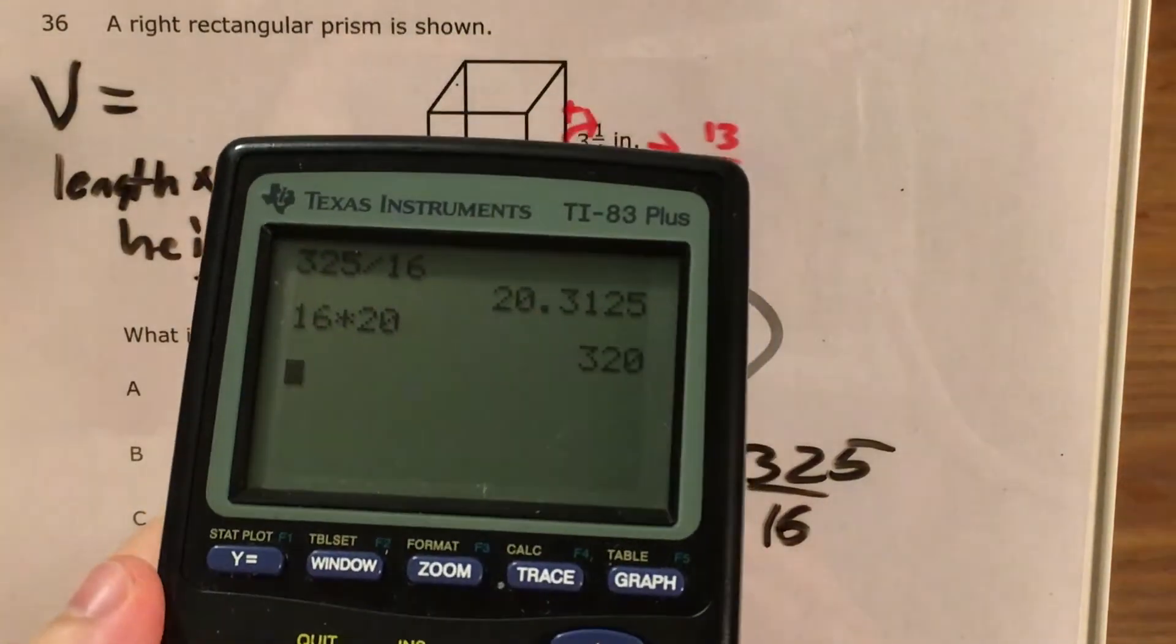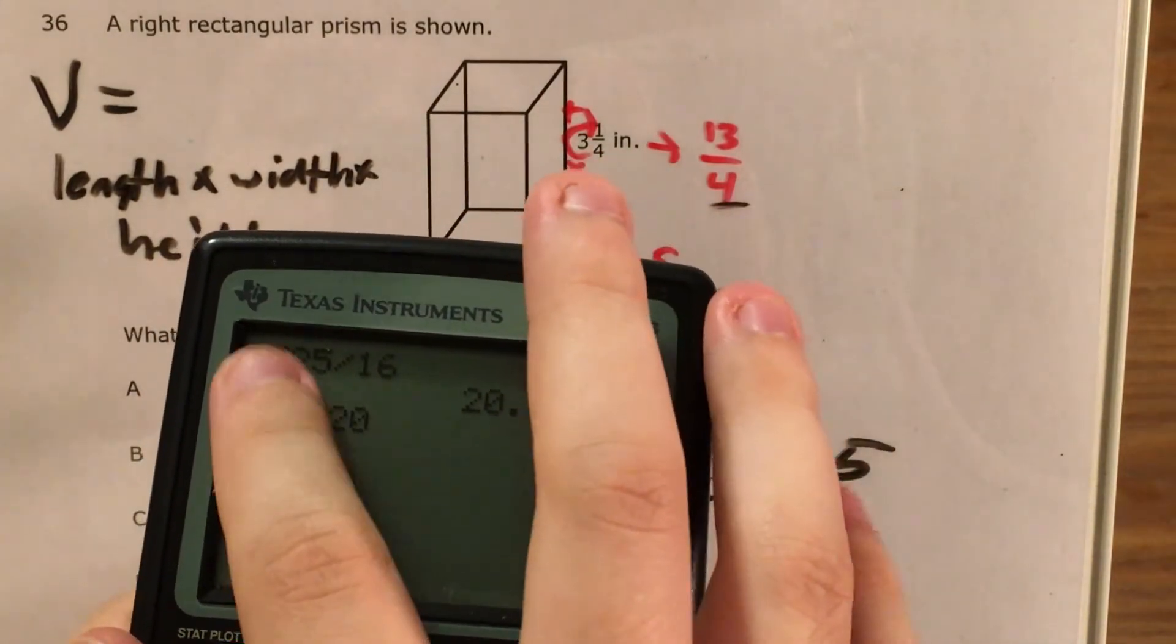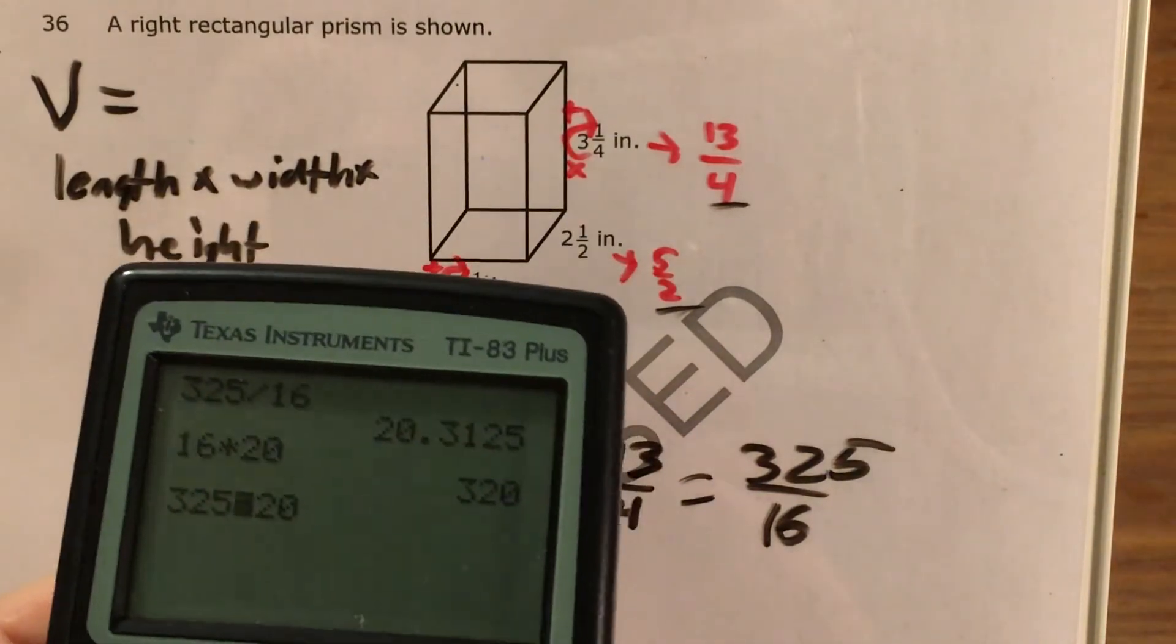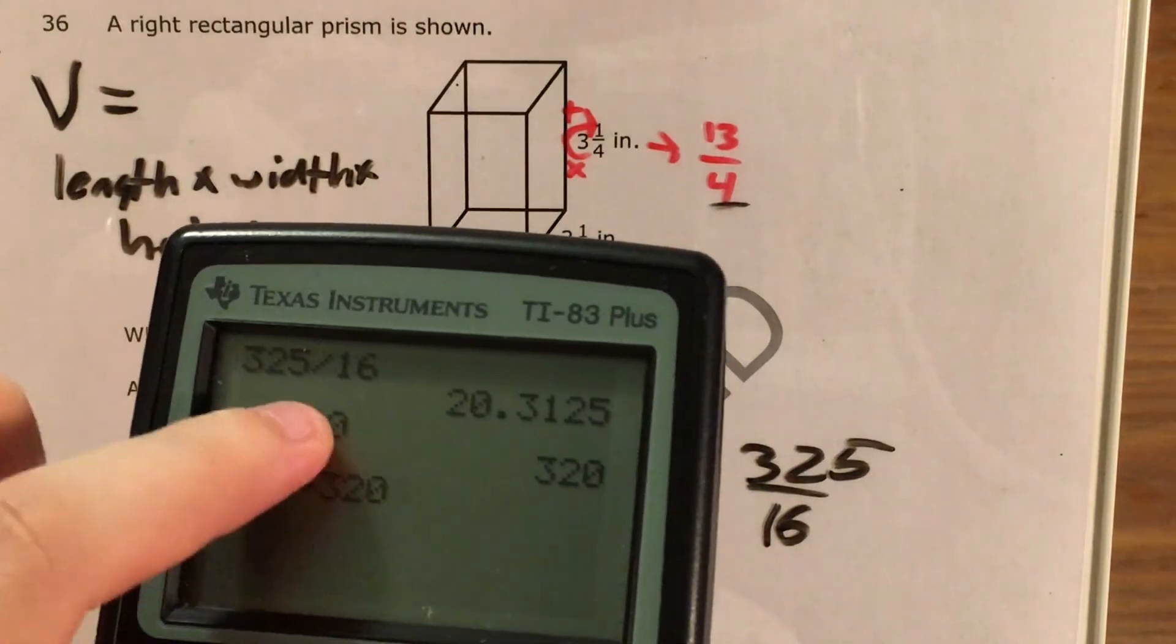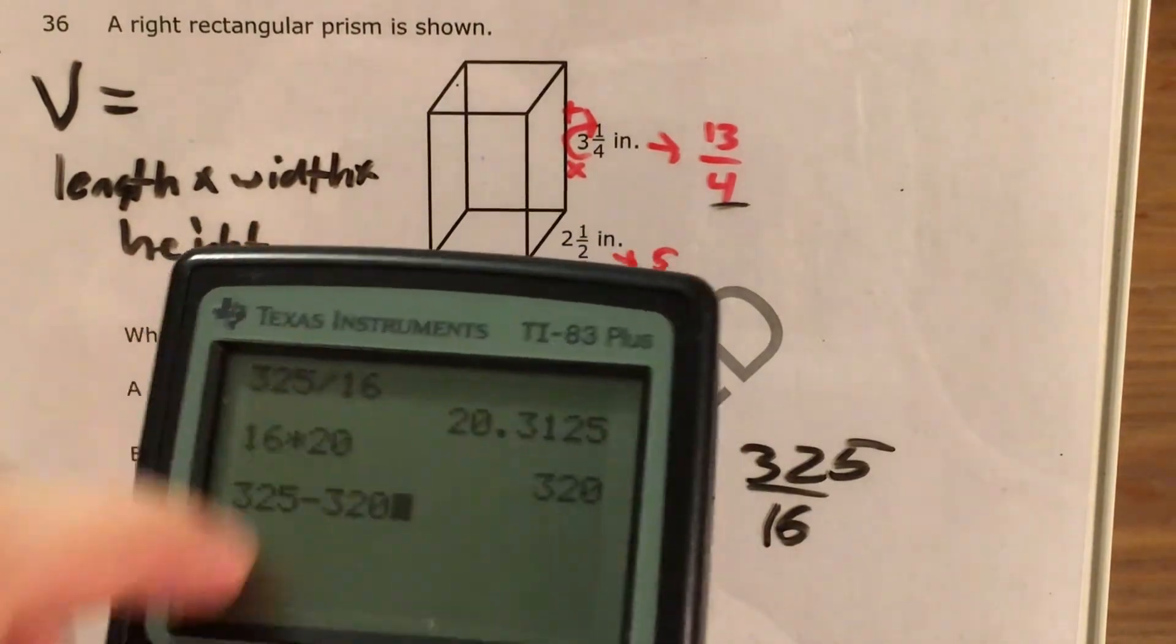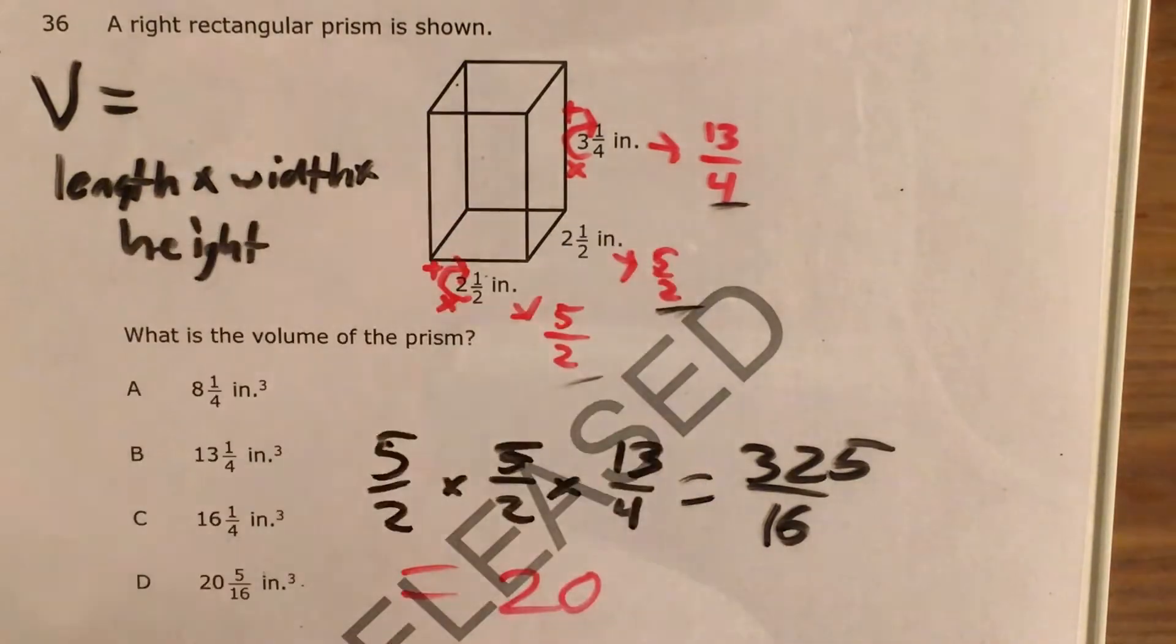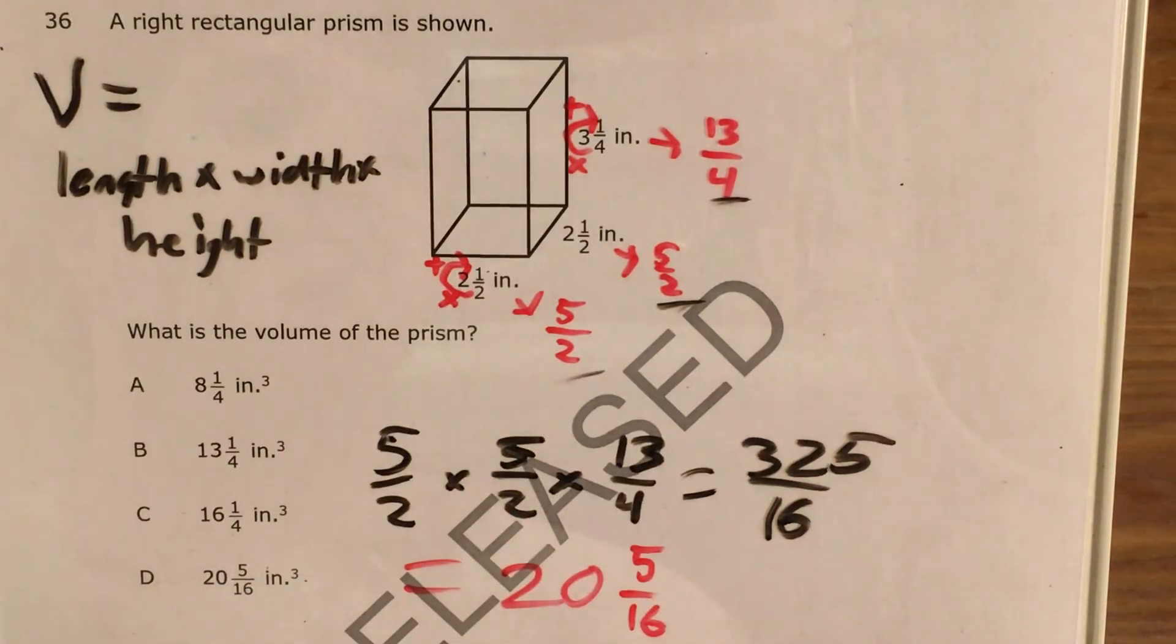I multiply 16 by 20 to get how much that group of 16 twenties is going to take out. And I finally subtract this number that represents 16 times 20 from my original number of sixteenths. And I'm left with just 5.